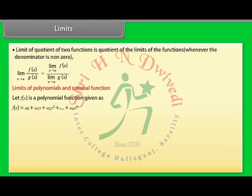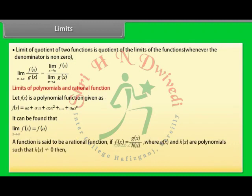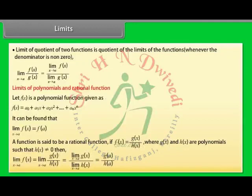Limits of polynomials and rational functions: Let f(x) be a polynomial function. It can be found that limit x→a of f(x) = f(a). A function is said to be a rational function if f(x) = g(x)/h(x), where g(x) and h(x) are polynomials such that h(x) ≠ 0. Then limit x→a of f(x) = limit x→a of g(x) by h(x) = limit x→a of g(x) / limit x→a of h(x) = g(a)/h(a).